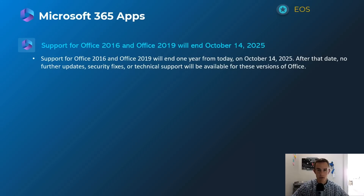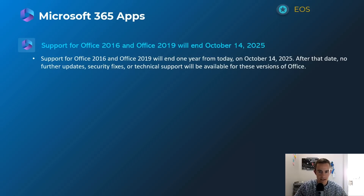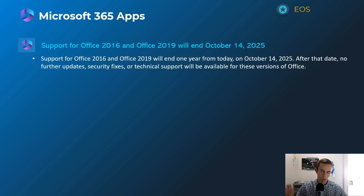Shifting into the 365 apps — this is a big announcement you need to pay attention to. This is the end of support for Office 2016 and 2019, which is less than a year out from when you're watching this video. It's not going to stop working, but you will get no more security updates and no more support. That's a really bad position to be in. My blog post links to the upgrade paths. If you're on these versions today, assess this in your environment and make sure you're upgraded by that date — ideally as soon as possible.